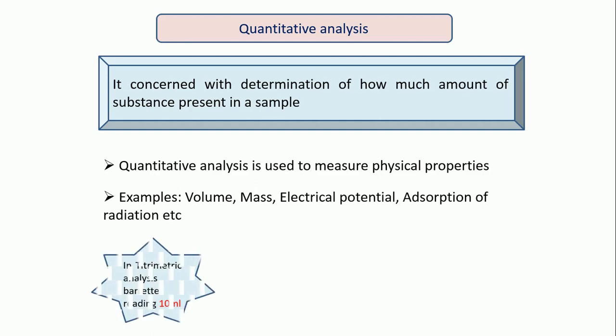First example: suppose we are doing analysis by using volumetric — that means titrometric analysis. We are doing the titration and we got the reading 10 ml. So that is the quantity — 10 ml reading is the quantitative analysis.